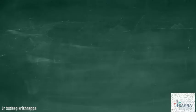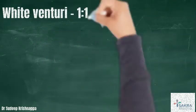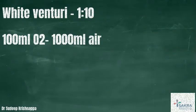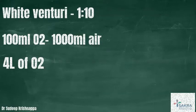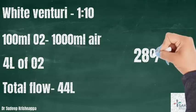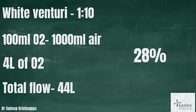The white venturi has an entrainment ratio of 1:10. For each 100 ml of oxygen flowing through the device, another 1000 ml of room air would be entrained. With the recommended flow rate of 4 liters of oxygen, the mixture of 100 ml of oxygen and 1000 ml of air gives a total volume of 1100 ml. The 100 ml of oxygen contributes 100 ml and the 1000 ml of air contributes about 200 ml of oxygen, totaling 300 ml in 1100 ml — roughly translating to an FiO2 of 28 percent.